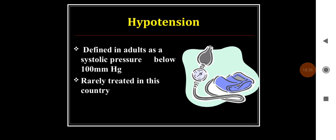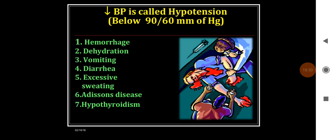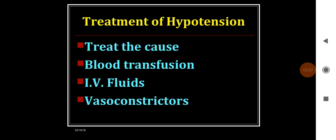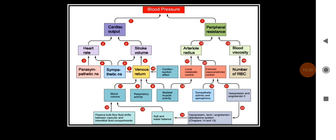Hypotension in adults is defined as systolic blood pressure less than 90 mmHg. The main causes include hemorrhage, dehydration, vomiting and diarrhea, excessive sweating, Addison's disease, and hypothyroidism. Treatment involves addressing the cause first, then blood transfusion, IV fluids, and if necessary, vasoconstrictors.